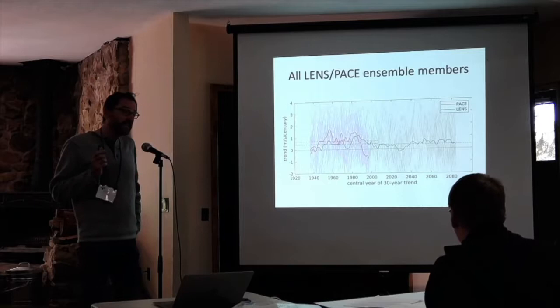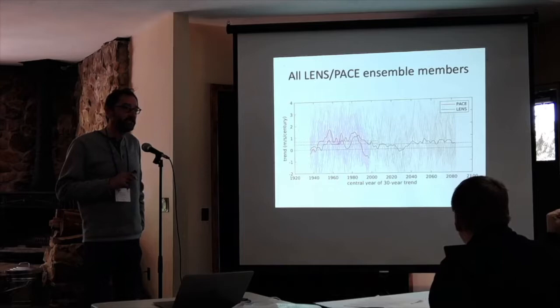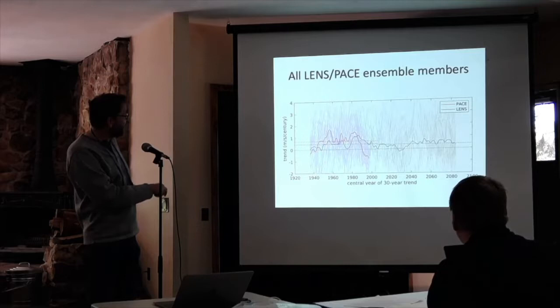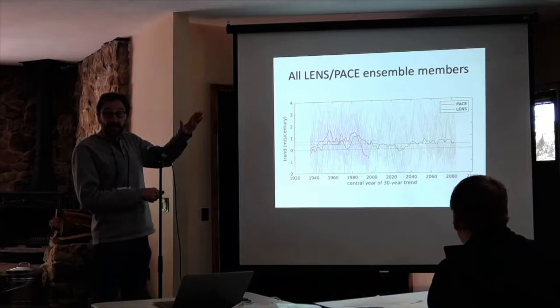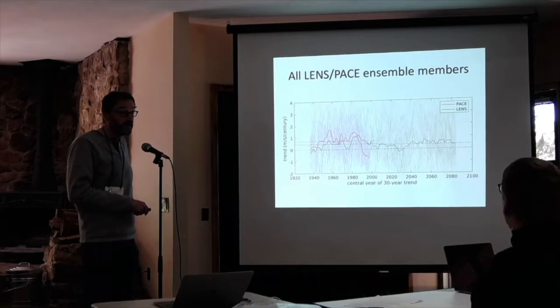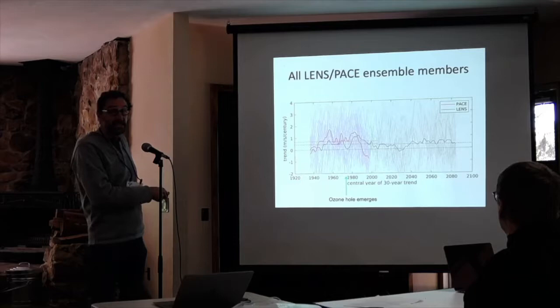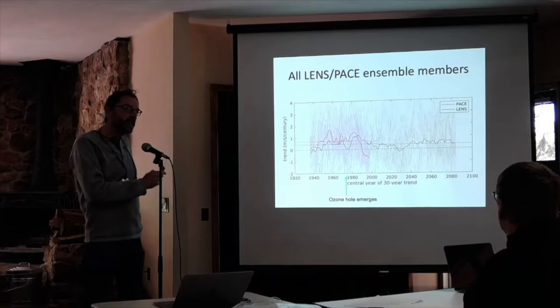Final thing — this shows all 60 ensemble members of the LENS and PACE runs. Reality could be any one of these. As you go forward into the future, the ensemble mean says the trend will continue, the westerlies are going to keep increasing. In the simplest picture, that means the circumpolar deep water inflow is going to keep increasing and heat content is going to keep increasing. Also, in the ensemble mean, the emergence of the ozone hole has basically no discernible impact — the trend begins at least in 1950. Ozone is part of the story, but it's not the main story. The main story is CO2.